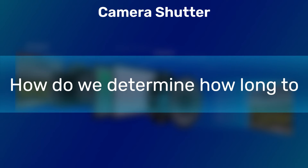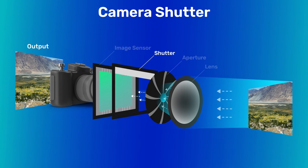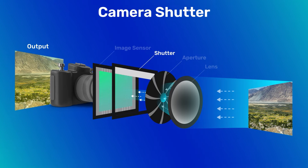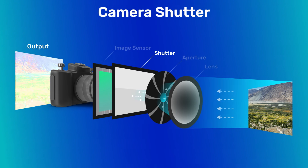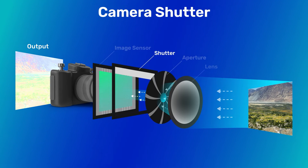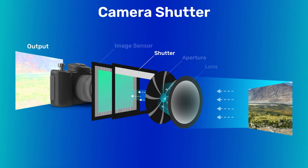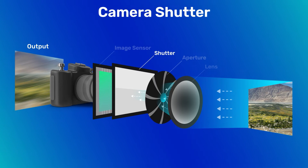How do we determine how long to open the shutter? If you open the shutter for a long time, more light hits the sensor and you get a higher quality picture. However, if you open it for too long, all the pixels saturate and you get a white picture. The other problem with opening the shutter for too long is that you may have moving objects in the scene, and the sensor will record this picture over time, so you will see motion blur.